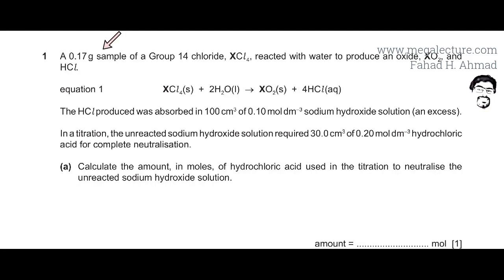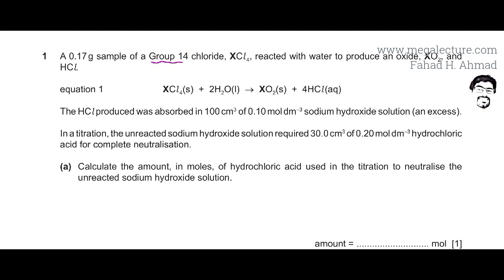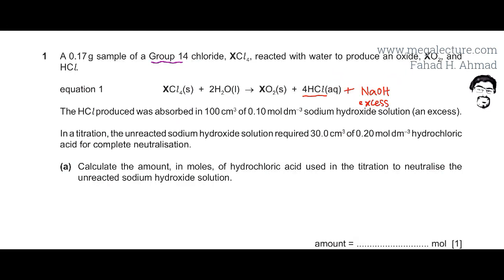The question states that a 0.17 gram sample of group 14 chloride XCl₄ reacted with water to produce an oxide XO₂ and HCl. We don't know what X is — only that it's a group 14 chloride. The HCl produced was absorbed in 100 cm³ of 0.1 mol per dm³ sodium hydroxide in excess, so this is the HCl reacting with excess NaOH.